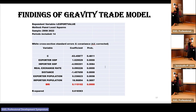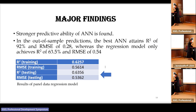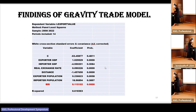The stronger prediction ability of ANN is evident. In the out-of-sample prediction, the best ANN attained an R-squared of 92% and an RMSE of 0.28, whereas the regression model only achieved 63.5% and an RMSE of 0.54. So the ANN R-squared can achieve 92%, compared to only 62% if we use only panel data estimation.